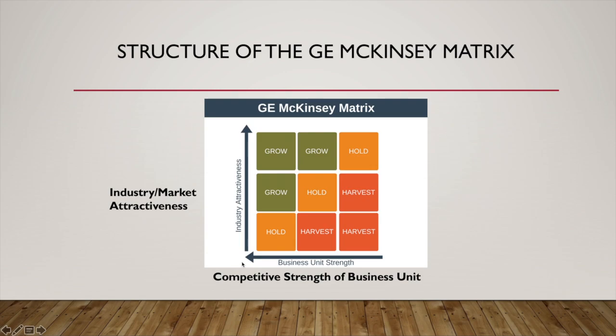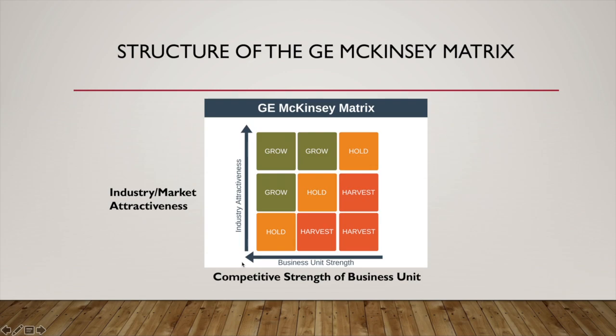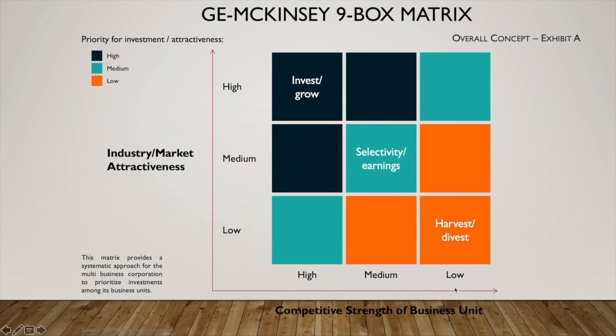The matrix comprises two axes. The competitive strength of the individual SBUs is represented on the x-axis, with market attractiveness represented on the y-axis. Both competitive strength and market attractiveness are determined by a weighted score calculated from the relevant factors that apply to each cell. Each parameter is further divided into three categories — low, medium, and high — which creates a matrix with a total of nine cells.